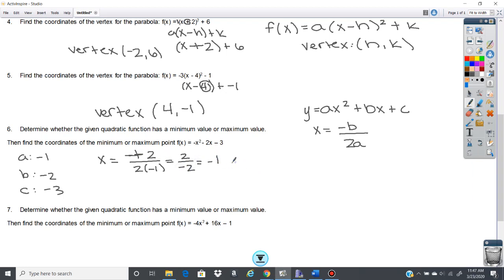Then to find the y value of the vertex, we're going to plug it back into the equation. So y equals -(-1)² - 2(-1) - 3. So (-1)² is going to give us a positive 1. It's going to be negative positive 1. Negative 2 times negative 1 is going to give you a positive 2, minus 3.